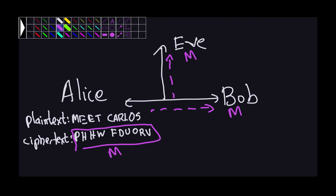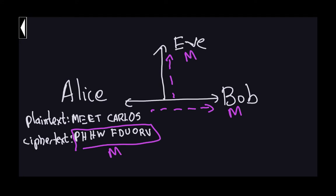So who is going to do the cracking? The cracking is going to be done by Eve, because Eve is the one interested in knowing what the messages are. When Eve gets the message M, it's encrypted by the Caesar cipher. So Eve is the one interested in cracking the message — in other words, finding out what the actual original message is.